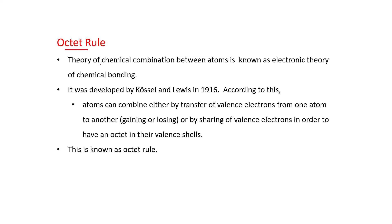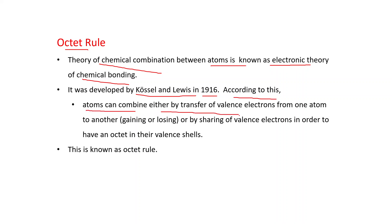Octet rule: the theory of chemical combination between atoms is known as the electronic theory of chemical bonding. It was developed by Kossel and Lewis in 1916. According to this, atoms can combine either by transfer of valency electrons from one atom to another — transfer means gaining or losing — or by sharing of valency electrons, in order to have an octet in their valency shells. Octet means eight electrons, and this is known as the octet rule.